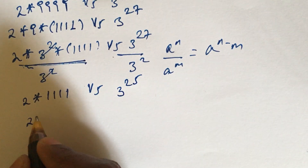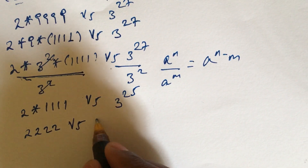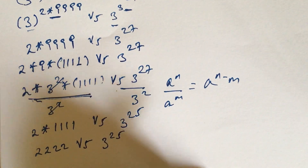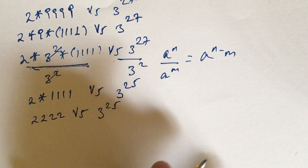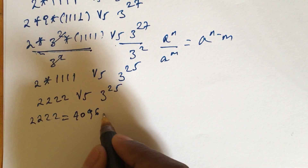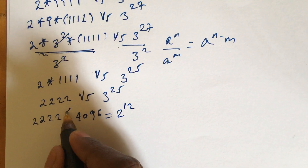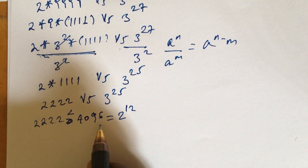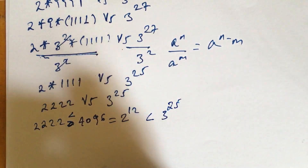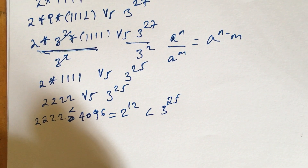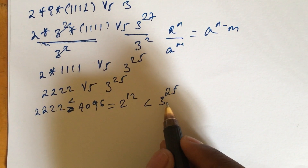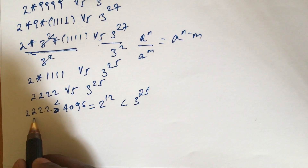Now we compare 2 to the power of 12 versus 3 to the power of 25. We calculate: 2 to the power of 12 equals 4096. Since 12 is less than 25, and the base 2 is less than base 3, we conclude that 4096 equals 2 to the power of 12, which is less than 3 to the power of 25.